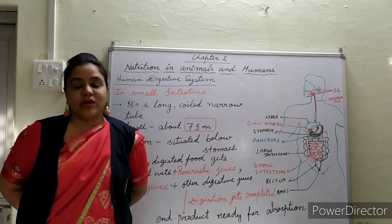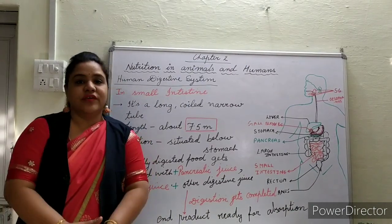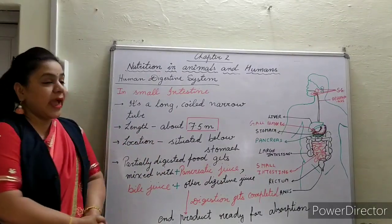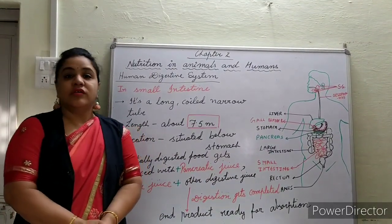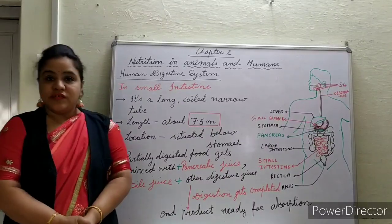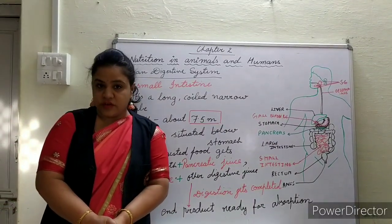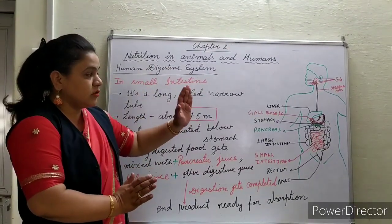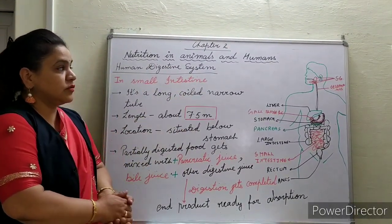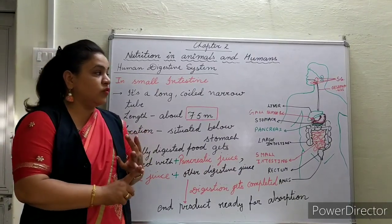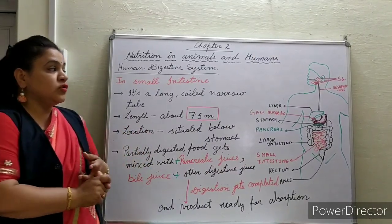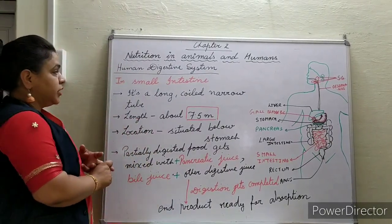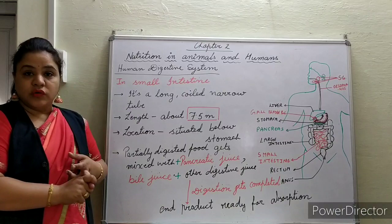Good morning students! We have already started Chapter 2, Nutrition in Animals and Humans, and we were learning the human digestive system. So far, we have learned how food travels through all the parts of the digestive system — from your mouth, to your esophagus, to your stomach. Till the stomach we have learned everything.